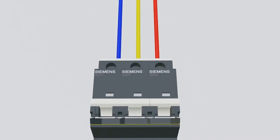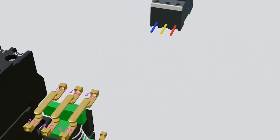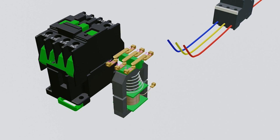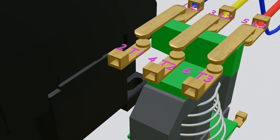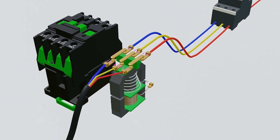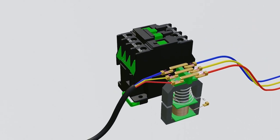L1, L2, and L3. Now, at the opposite side of the contactor, T1, T2, and T3 are directly connected to the load.